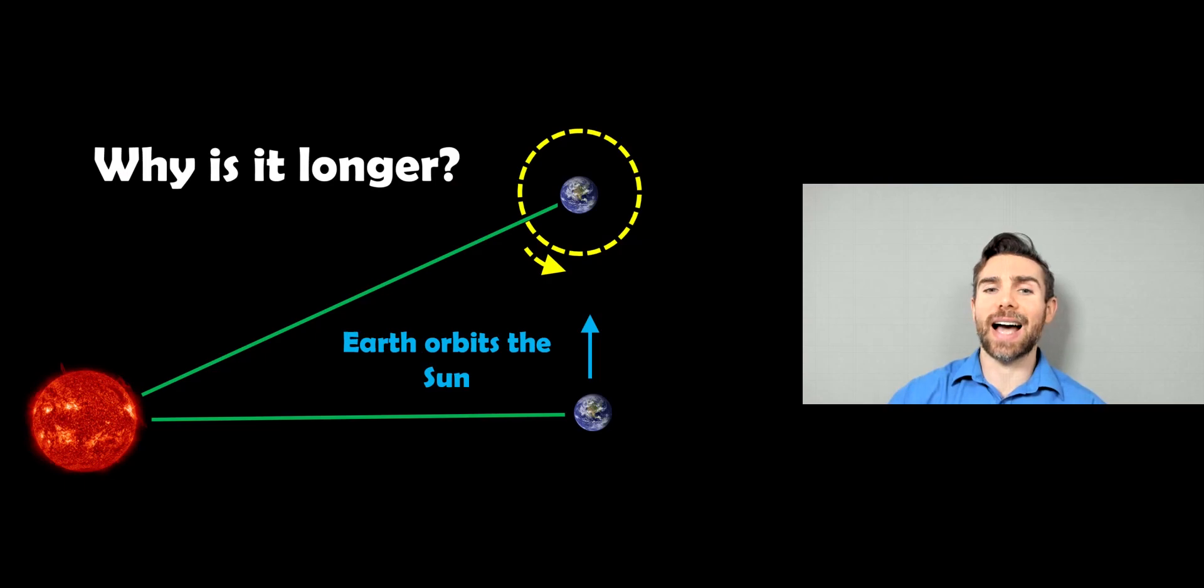So why is it actually longer? Well, the Earth is orbiting the Sun. And as it is orbiting the Sun, the Earth is rotating. And because it's moved along a little bit, in order for you to have the Sun in the same position in the sky, it's got to rotate that a little bit further. So instead of using the background stars this time around, we're using the Sun as the reference point.